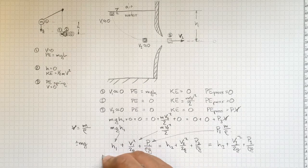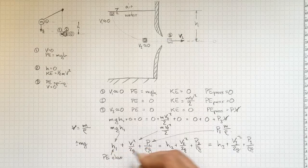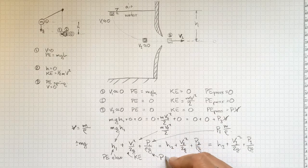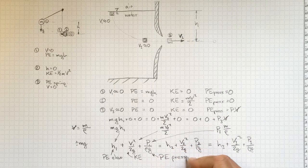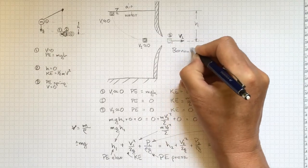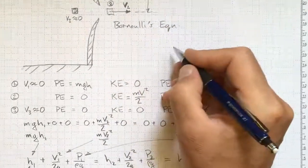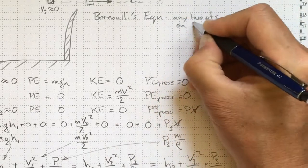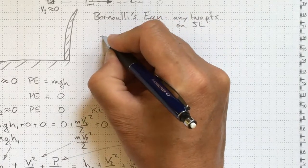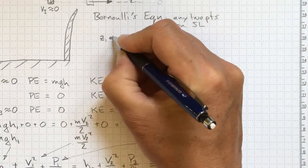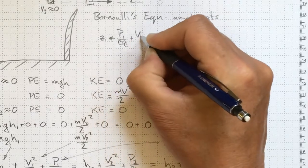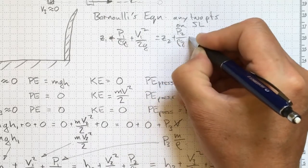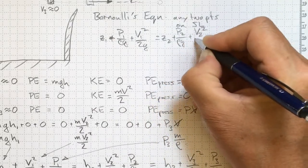This is potential energy of elevation. This is kinetic energy. And this is potential energy of pressure. All three of these taken together give us Bernoulli's equation. We can write it between any two points on a streamline. And it usually is written as z1 plus p1 over rho g plus v1 squared over 2g equal to z2 plus p2 over rho g plus v2 squared over 2g.